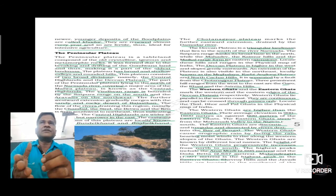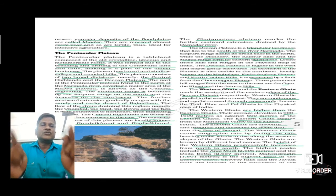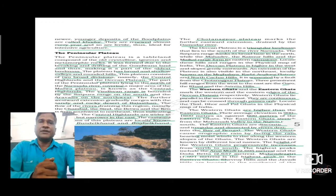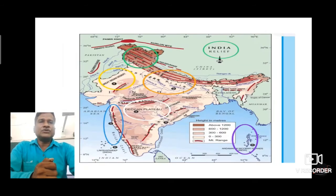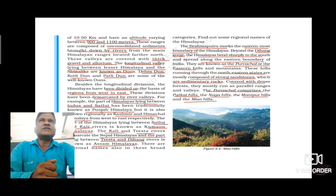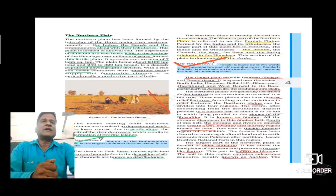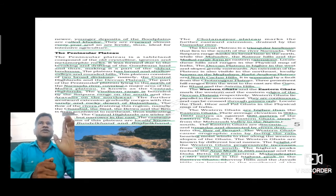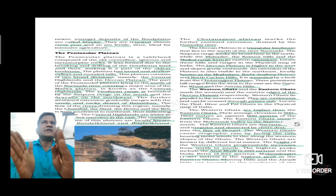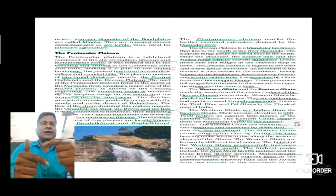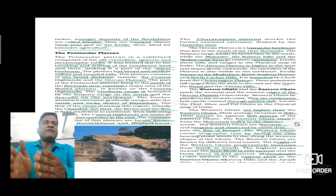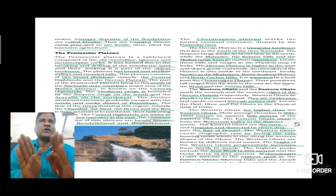The second division is the Deccan Plateau. If you look at the map of our nation, you will find that the Deccan Plateau is a triangular landmass that lies to the south of the river Narmada — it is triangular in shape, which I have highlighted with white color. The Deccan Plateau is higher in altitude in the west and has gentle slopes in the eastward direction.